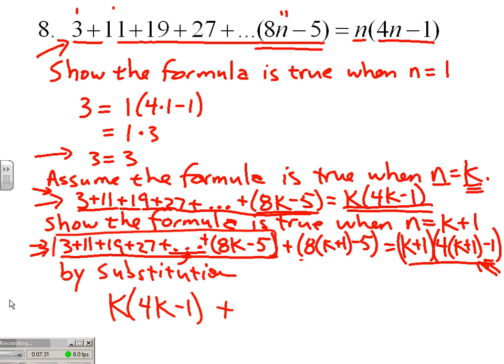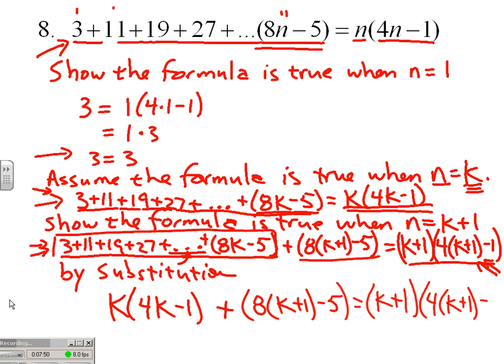But my center is still in the game: plus 8 times k plus 1 minus 5 needs to be equal to k plus 1 times 4 times k plus 1 minus 1. You may want to get that last equation jotted down or take a look when we flip to the next slide. We're going to pick it up from there.